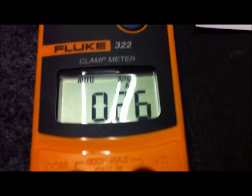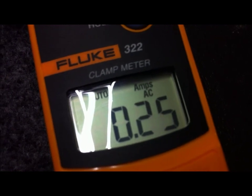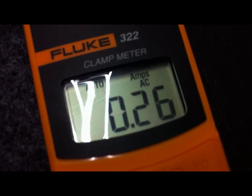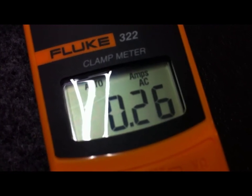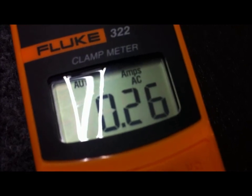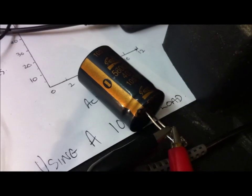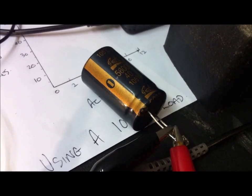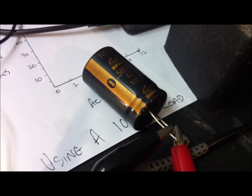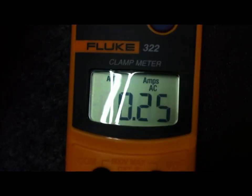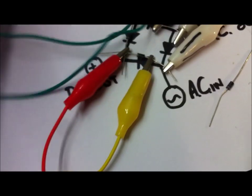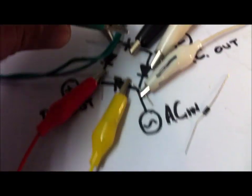And just make a note, by the way, that current draw on the system from the AC side of things is 250 milliamps now, 260. That jumped straight up as soon as we added that smoothing capacitor onto the circuit. So just remember that 260 milliamps, 250.